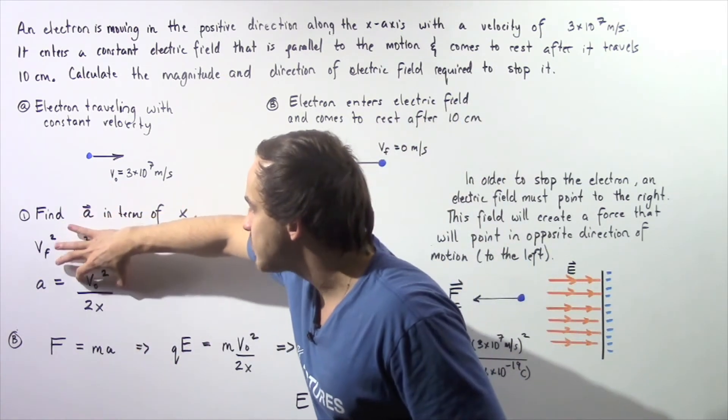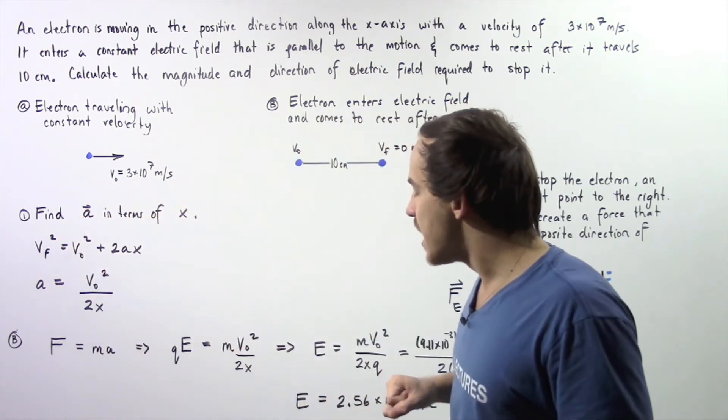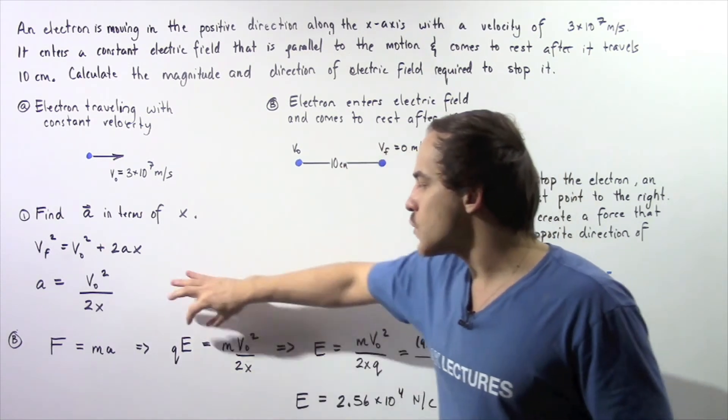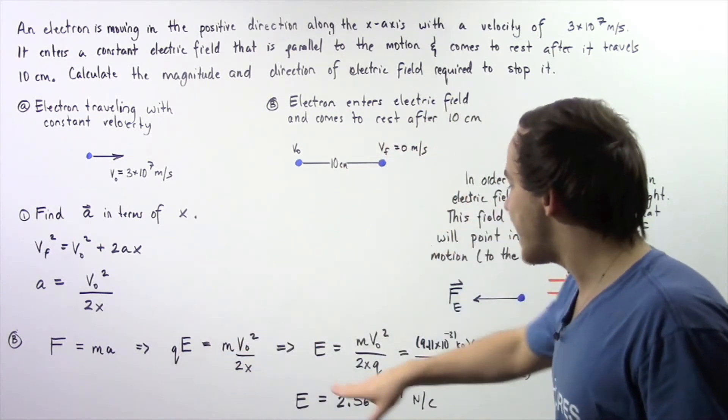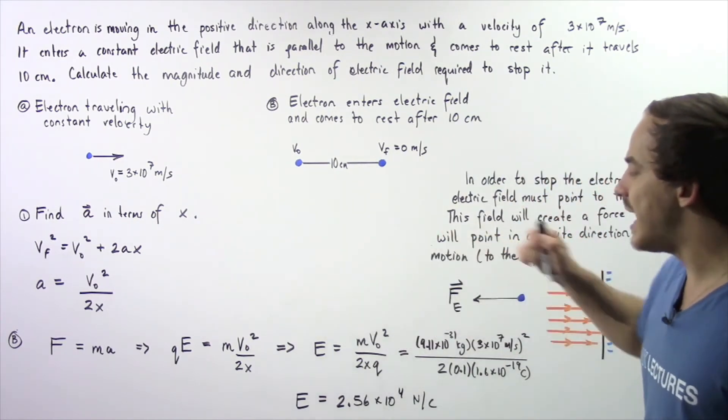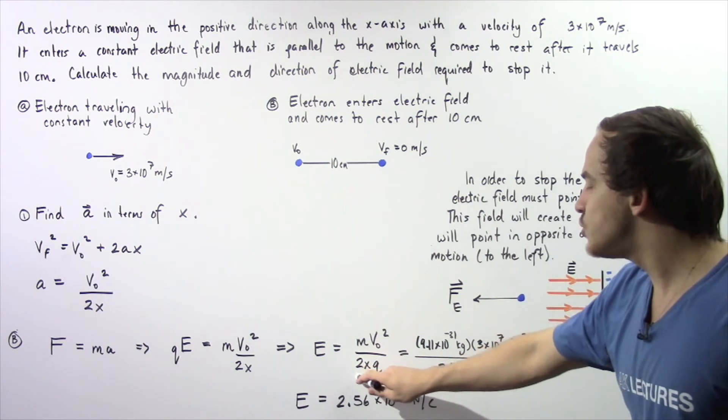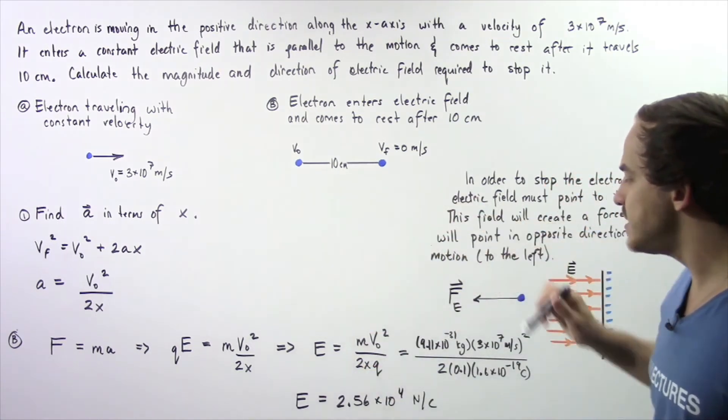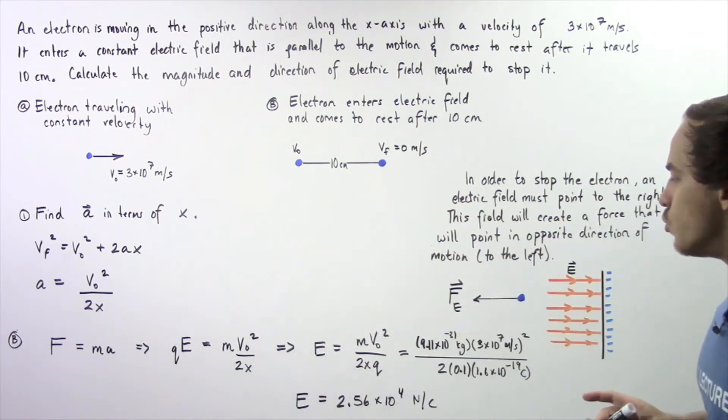We can solve for E: E equals m multiplied by the initial velocity squared divided by 2 multiplied by our displacement multiplied by q.